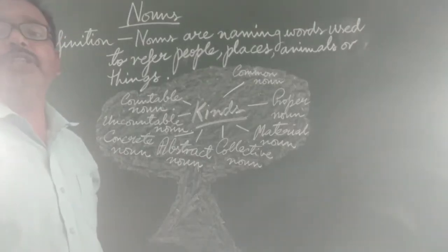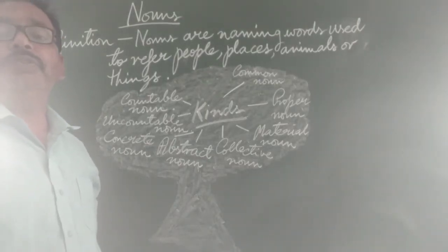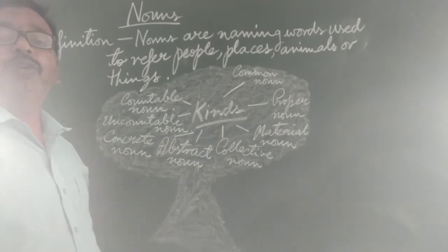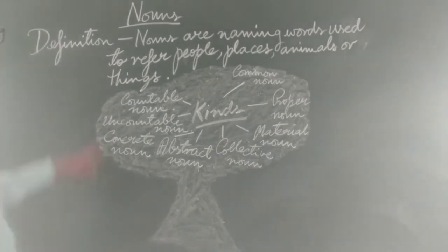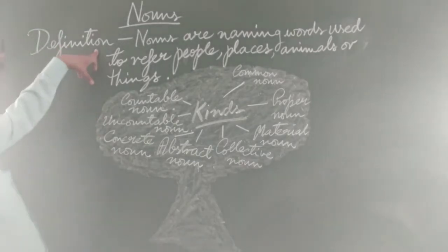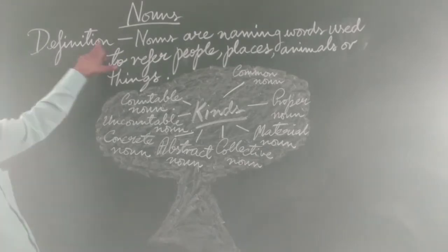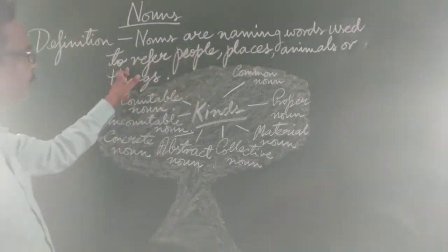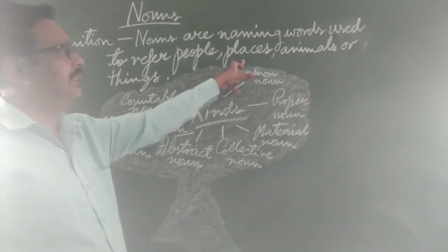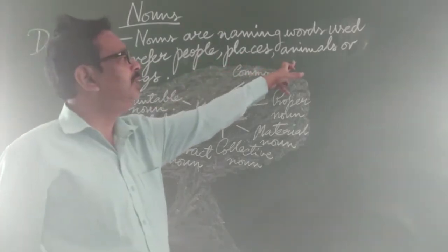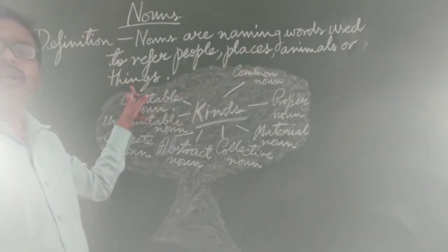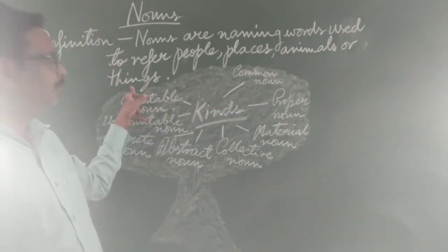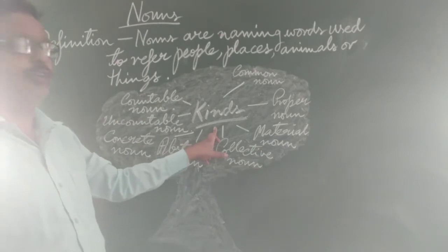Students, today we will study Naam. First of all, we will learn the definition of Naam. What is the Naam? Look at the definition given here. Naam is a word used to refer to people, places, animals, or things. Now we will move to kinds of Naam.